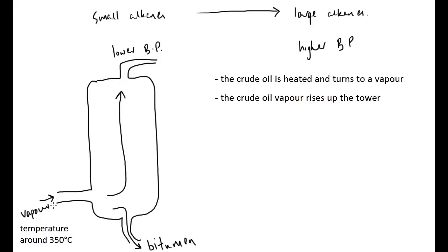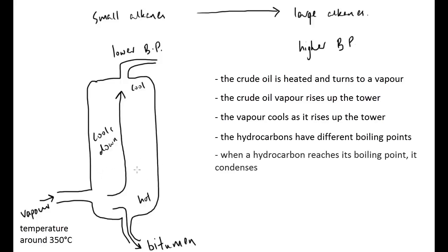And what happens is as this vapor rises up, it gets cooler. So, as it rises, it cools down as a natural temperature gradient. This isn't forced, it just happens naturally as it goes from the hot bottom to the cool top. The top being maybe 40, 50 degrees. As it therefore rises up and the temperature changes, there will be points at which these alkanes, the hydrocarbons that are within the crude oil, as they rise up, they will reach their boiling point. And when they reach their boiling point, they condense. And as they condense, they can be pumped off.